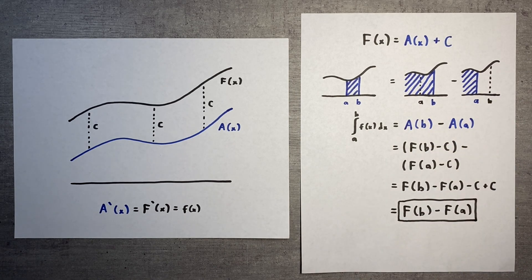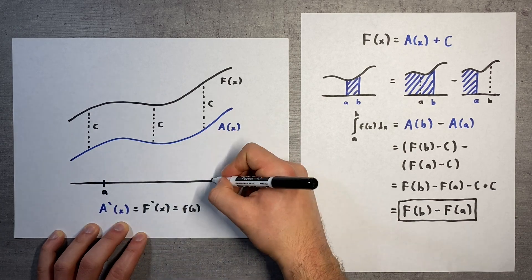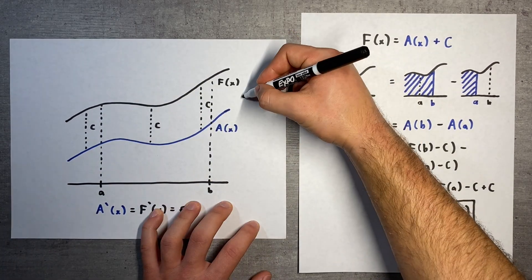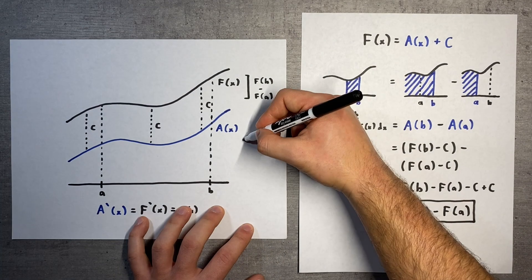No matter how the antiderivative's output is shifted, we can still use it to determine changes in the area function, which is equal to the area under the curve on an interval.